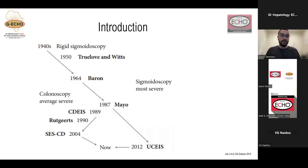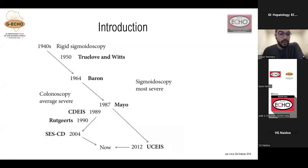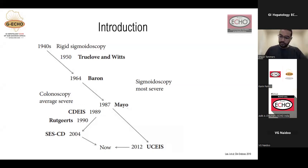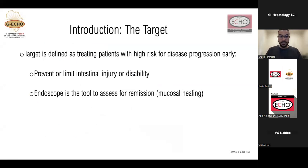Looking at the history of endoscopy over the years: in the 1940s it started off with rigid sigmoidoscopy; Truelove and Witts in the 1950s had a simple scoring system for colitis. The Baron Index was developed in 1964, and in 1987 the Mayo Endoscopic Scoring Index was developed. It wasn't until 2012 that the ulcerative colitis endoscopic index of severity was developed. For Crohn's disease, the Crohn's disease endoscopic index of severity was developed soon after the Mayo Endoscopic Score, followed by the Rutgeerts score, later modified in 2004 as the simplified score.